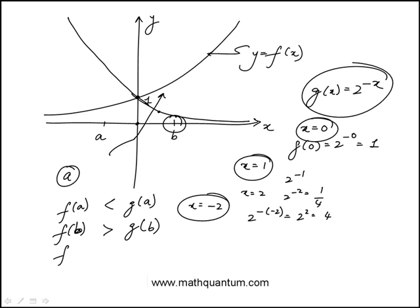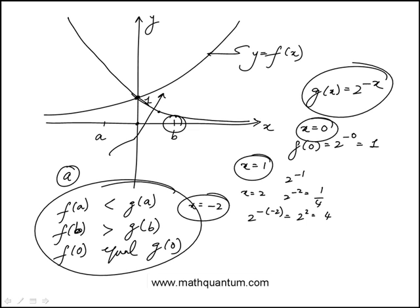And finally, f(0) which is 1, and g(0) is also 1, so f(0) equals g(0). Those are the answers for the table.